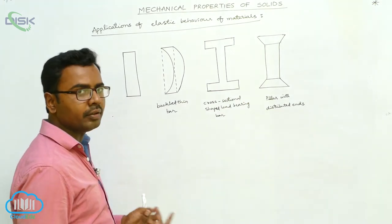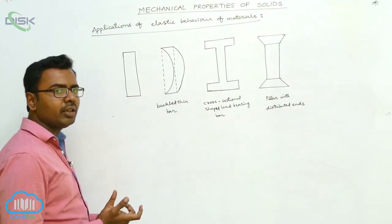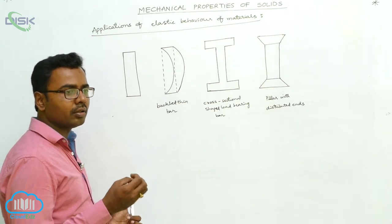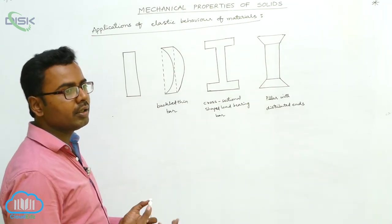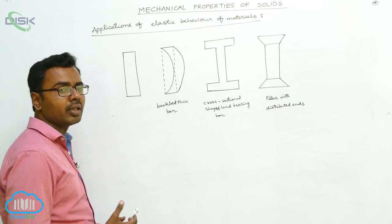For example, in our daily life, we have rubber and steel. We feel that rubber is more elastic than steel. It is a common thing we feel in our daily life. But rubber is not more elastic compared to steel. Steel is more elastic than rubber.